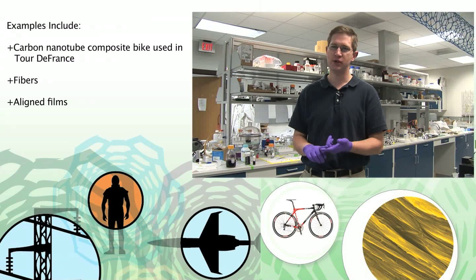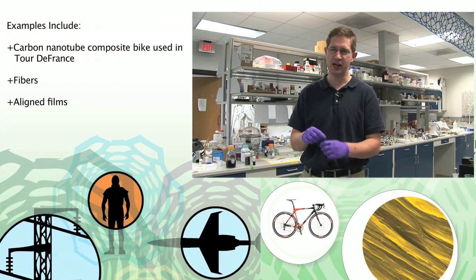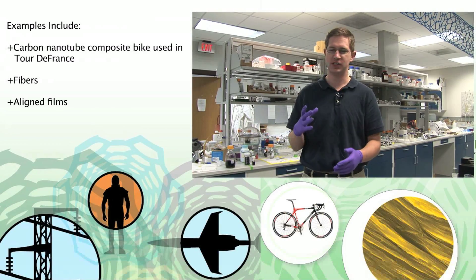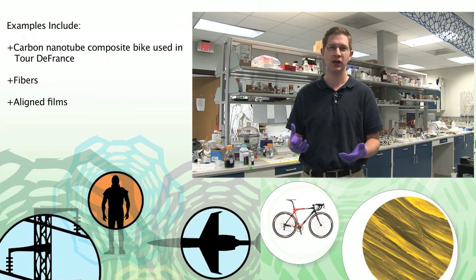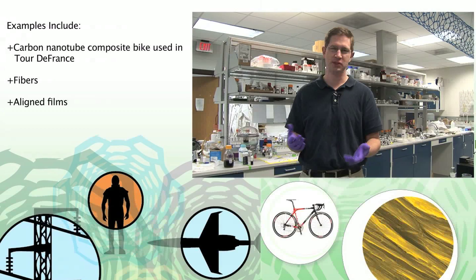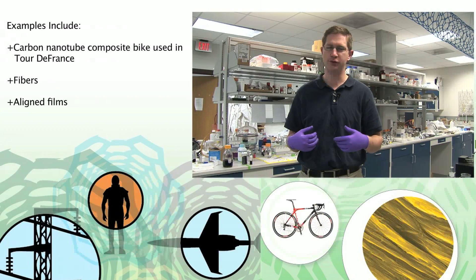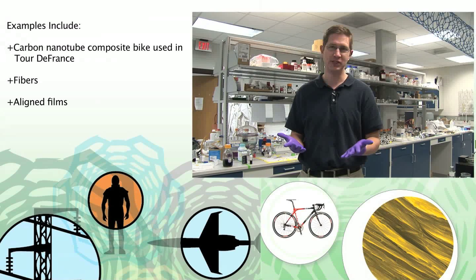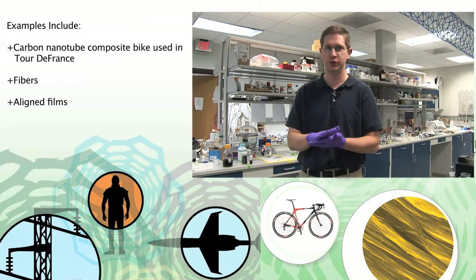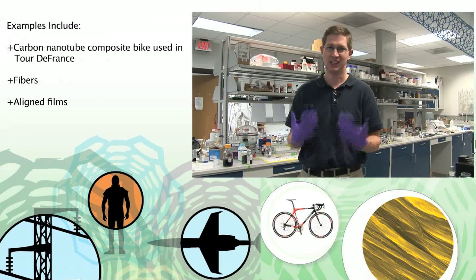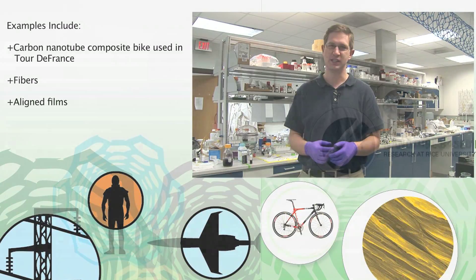The reason that we try to make these aligned fibers is because of Kevlar. Kevlar is a substance made by DuPont. It's made from rod-like polymers to make things like bulletproof vests, and really that's what a nanotube is too — it's also a rod-like polymer. So you should be able to spin nanotubes into these strong fibers to make things like bulletproof vests.